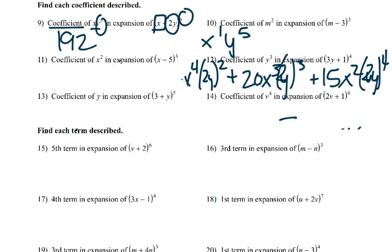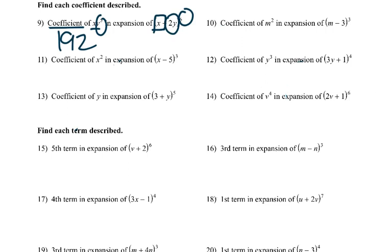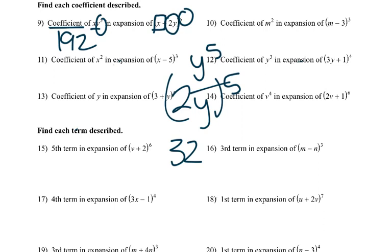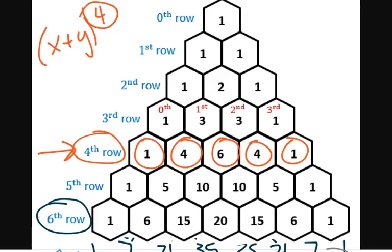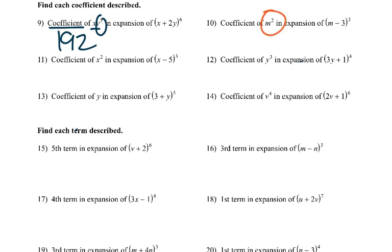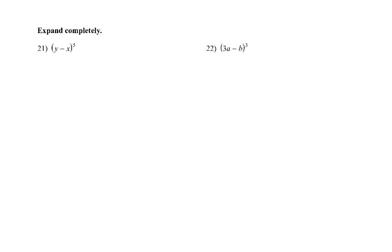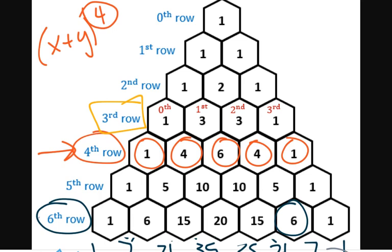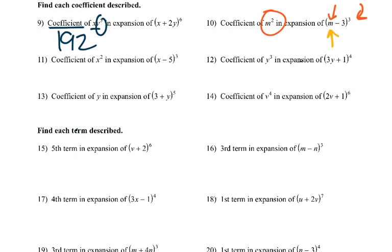There's an easier way to do this: because y is going to the fifth with 2y, 2^5 = 32, and the coefficient from the triangle is six, we just multiply those together. So for the coefficient of m^2 in (m + ...)^3, we go to row three. The m^2 position has coefficient three, and because it's just m, our coefficient is three.